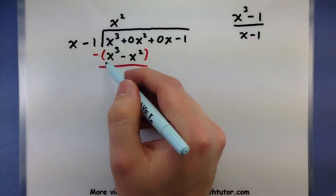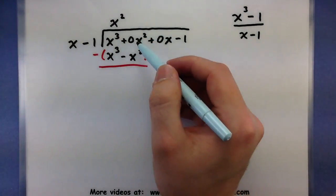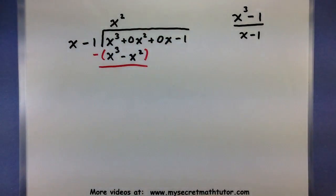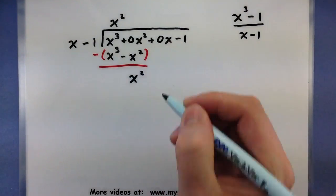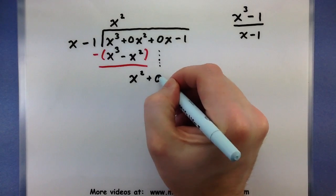First two terms are canceling each other out. Awesome. 0 minus a -x², so 0 plus an x², gives us x². Bring down the next term. Continue again.